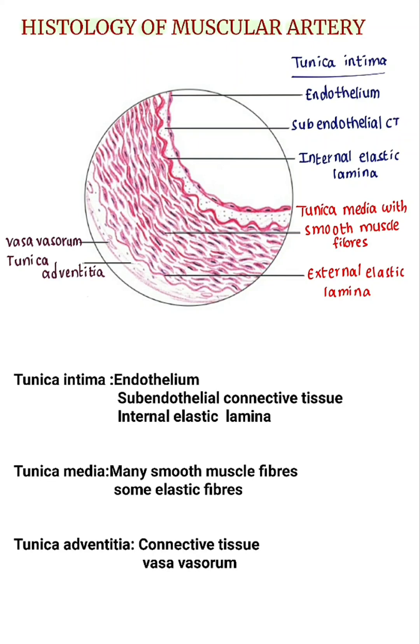In this video we are going to learn about histology of muscular artery. Muscular arteries are medium sized arteries. These are the most numerous arteries in the body. Examples of medium sized arteries are brachial artery, femoral artery, and other arteries of the limbs.